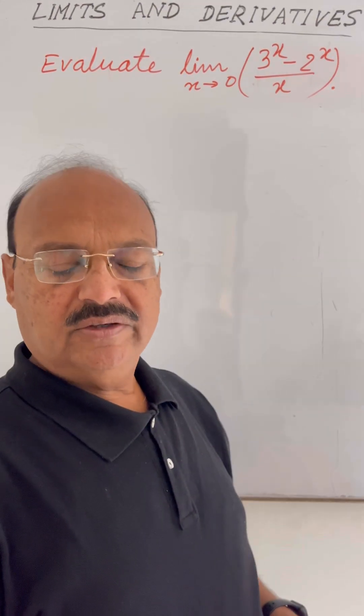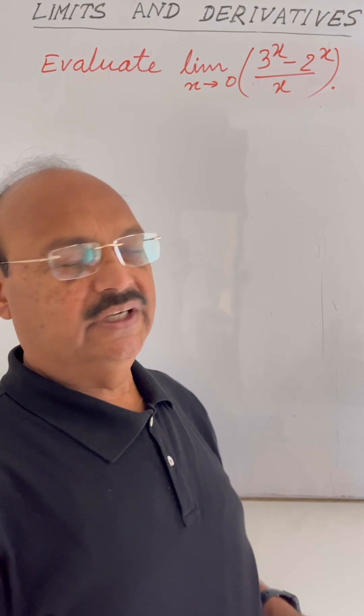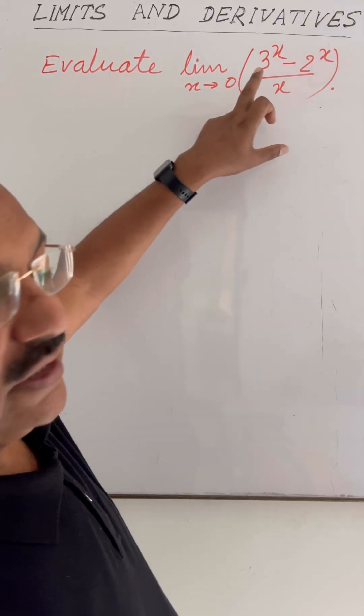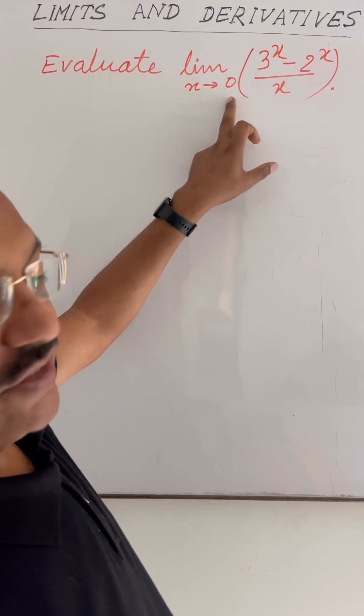We are discussing a very important question from the chapter limits and derivatives of class 11. Here the question is evaluate limit of the function 3 to the power x minus 2 to the power x upon x when x tends to 0.